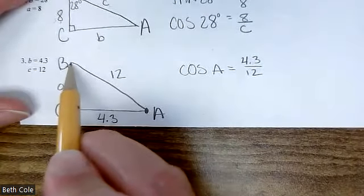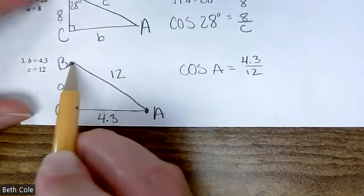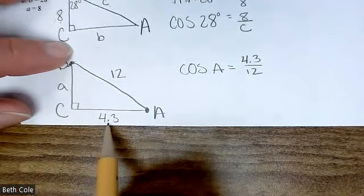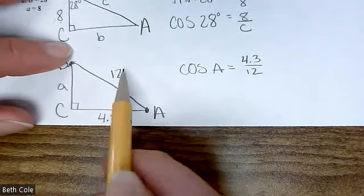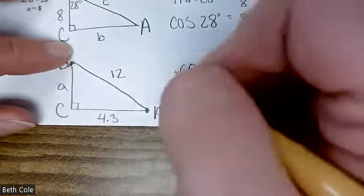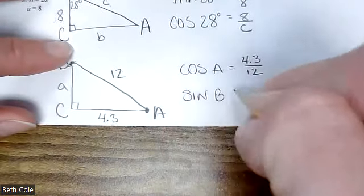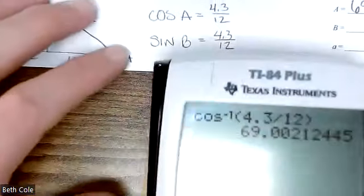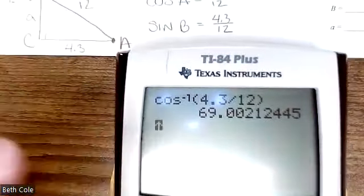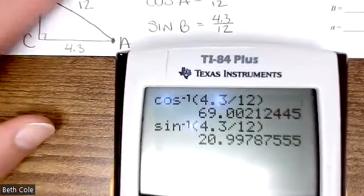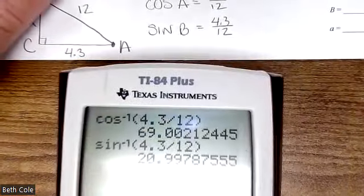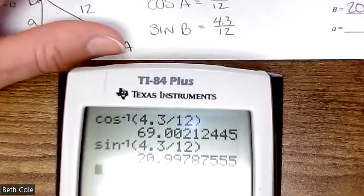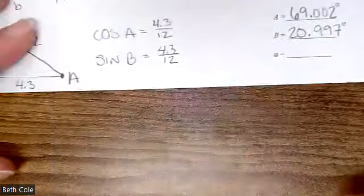Now we're going to find B. That means this is now your point of view. You're now up here. So 4.3 is now the what? Opposite 12 is hypotenuse. So opposite and hypotenuse means sine. So sine of B equals 4.3 over 12. So I'm going to do sine inverse 4.3 divided by 12. I got 20.997. Can anyone confirm that? Perfect. 20.997.